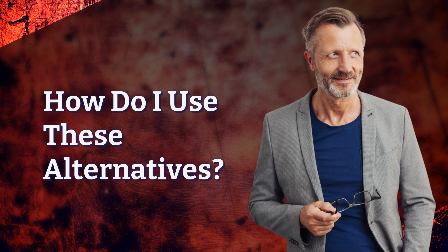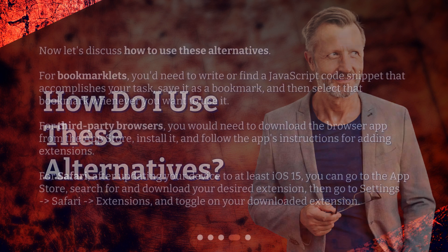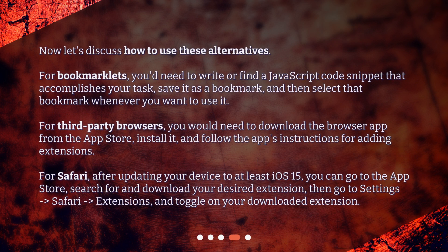Now let's discuss how to use these alternatives. For bookmarklets, you'd need to write or find a JavaScript code snippet that accomplishes your task, save it as a bookmark, and then select that bookmark whenever you want to use it. For third-party browsers, you would need to download the browser app from the App Store, install it, and follow the app's instructions for adding extensions.